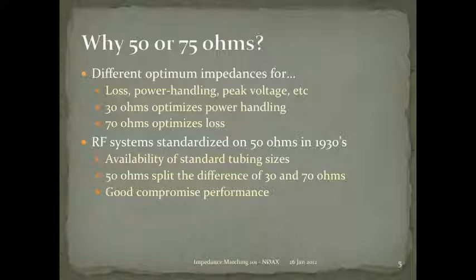Going the other direction, around 70 ohms optimizes for lowest loss — that's why the cable TV industry uses 75-ohm feed line. They want the highest signal power at the far end of the line. So you have 30 ohms for power handling and 75 ohms for minimum loss.